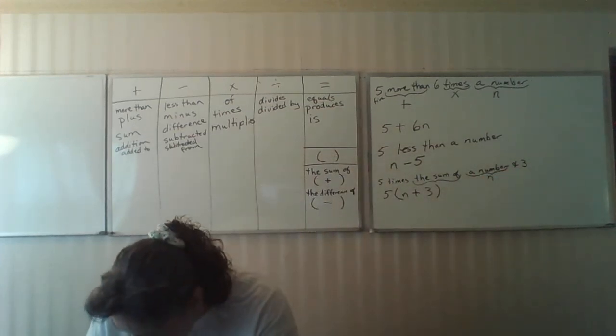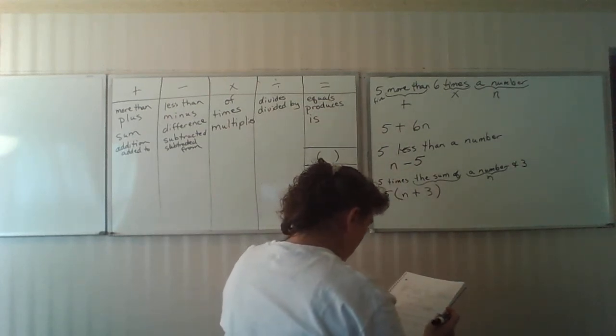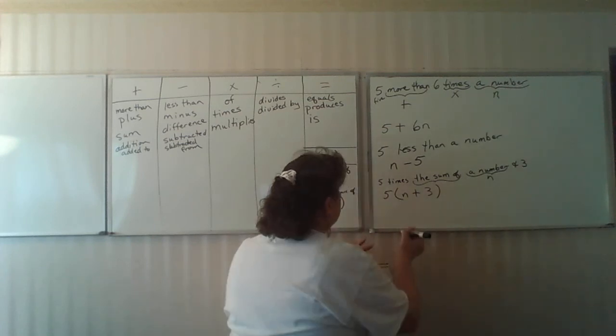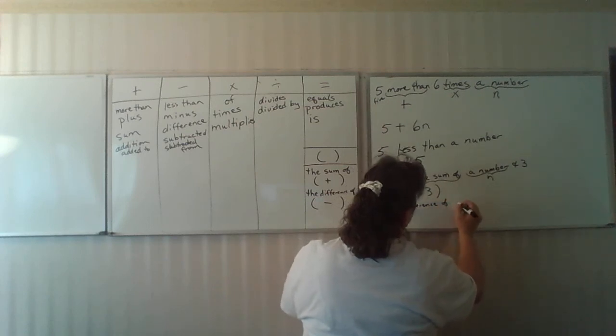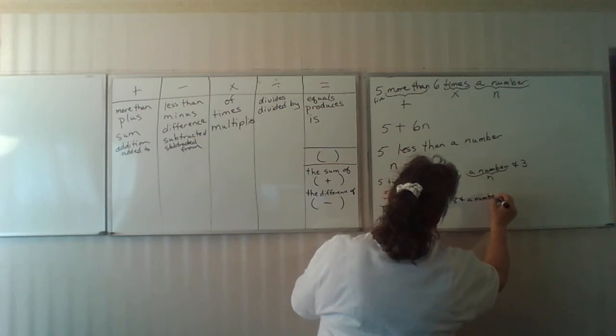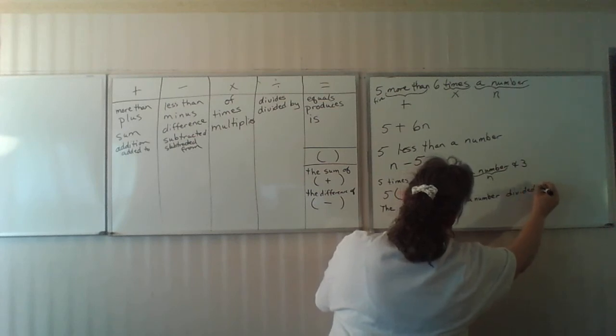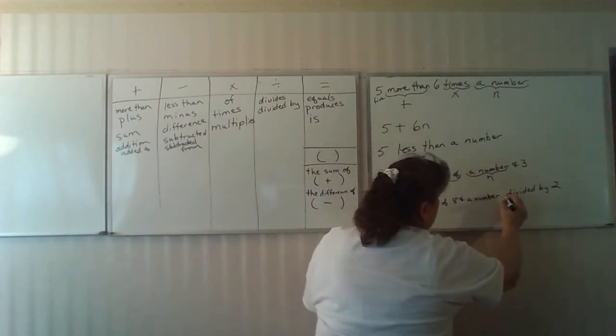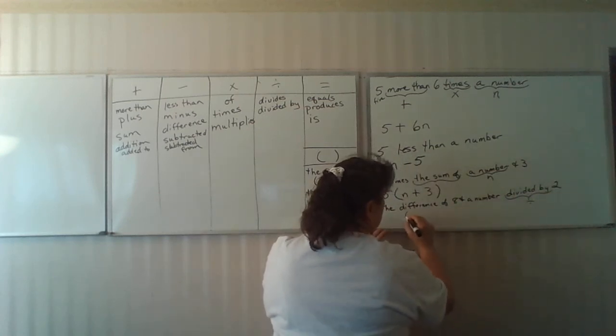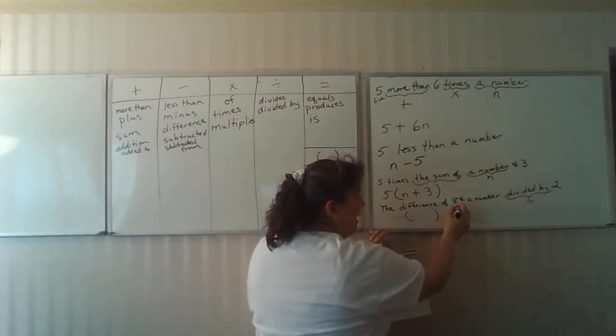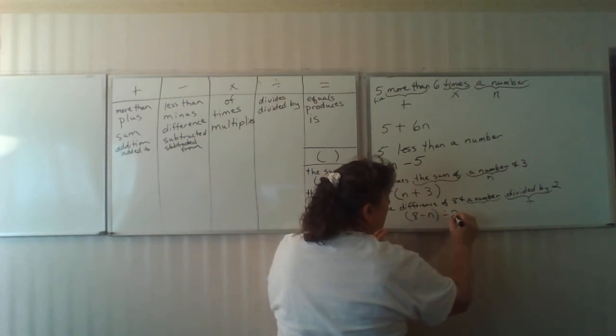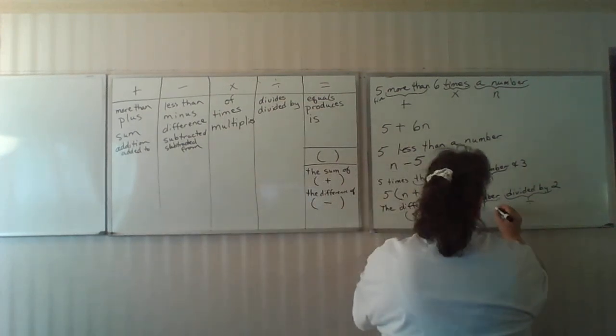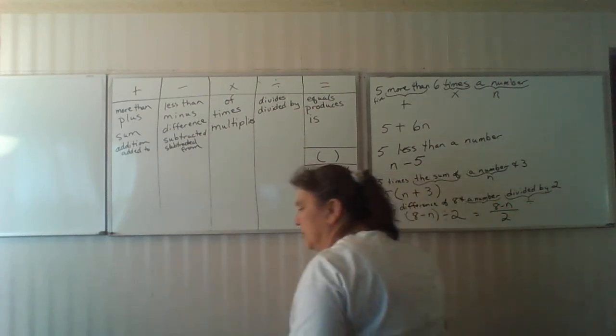Let me do this one: the difference of eight and a number divided by two. This is your division. The difference of indicates a parenthesis of eight and a number. So it's eight minus n, there's your variable. Difference means it's a subtraction divided by two. Or I could use 8 minus n over 2. These are equivalent to each other.